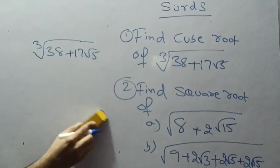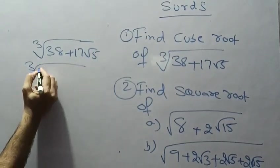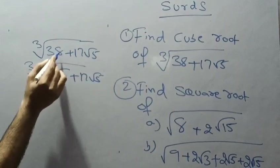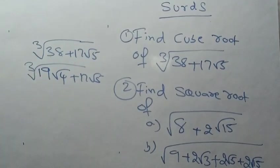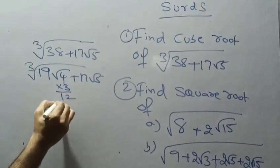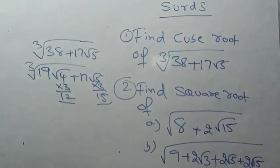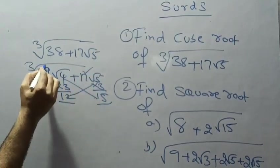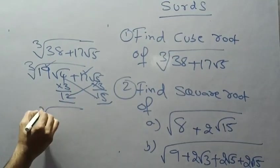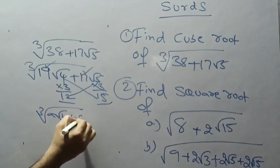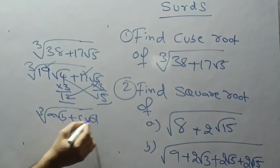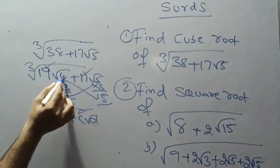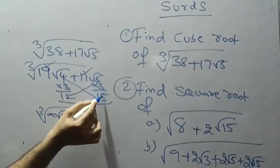Now I try another form: writing 38 as 19·√4 (since 19×2=38), giving cube root of (19√4 + 17√5). Multiplying root values by 3: 4×3=12 and 5×3=15. Checking: 12+5=17 ✓ and 15+4=19 ✓. This condition is satisfied, so this form is correct.